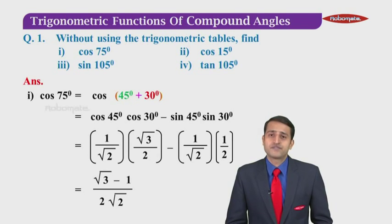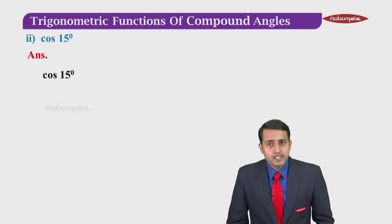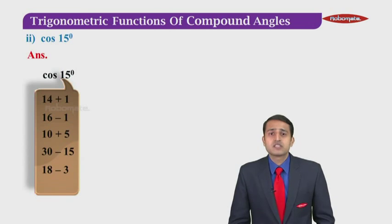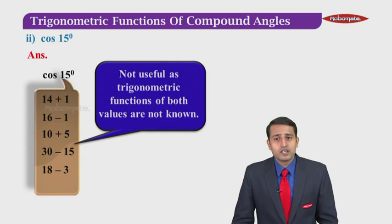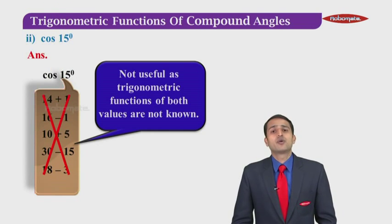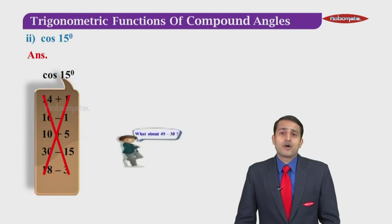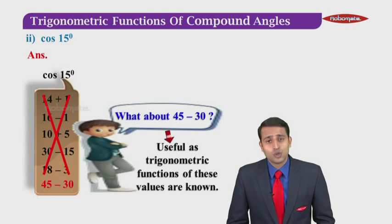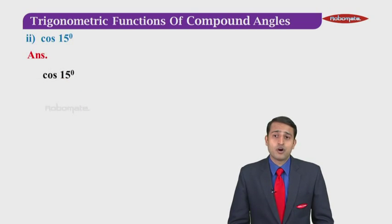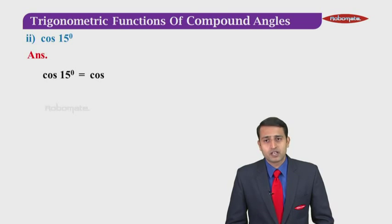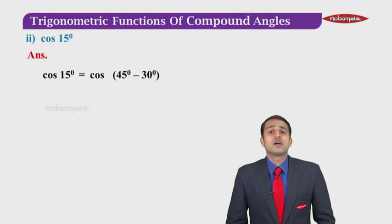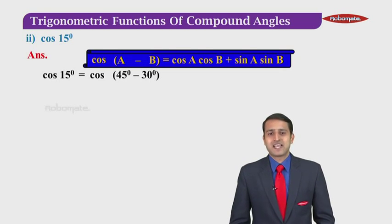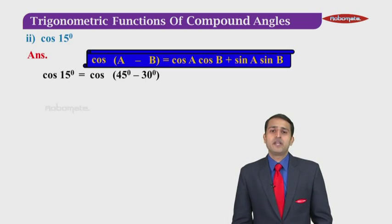On the same lines, we solve cos 15°. The idea is the same: express 15° as the sum or difference of two angles. We can try 14+1, 16−1, 10+5, but they are not useful since we don't know the trigonometric functions of both values. So 45°−30° works for us, as the trigonometric functions of these values are known. So cos 15° is written as cos(45°−30°). This is in the form of cos(A−B), and the formula is cos A cos B plus sin A sin B, where A = 45° and B = 30°. Applying this, we get cos 45° · cos 30° plus sin 45° · sin 30°.